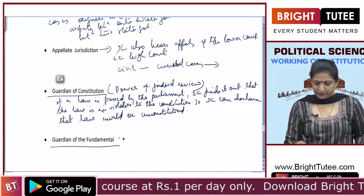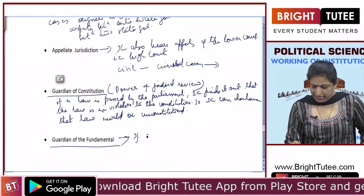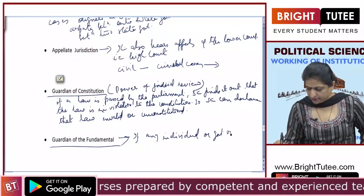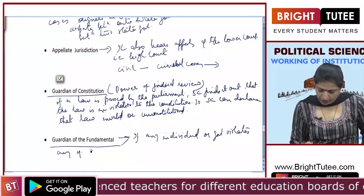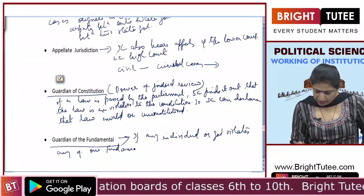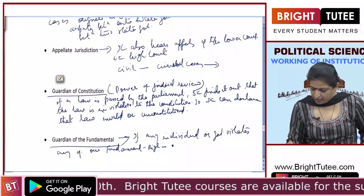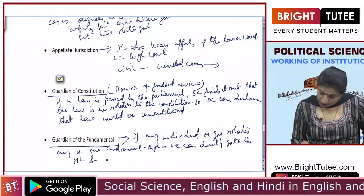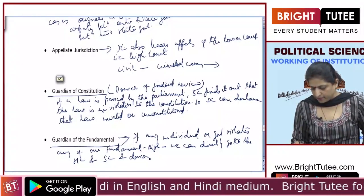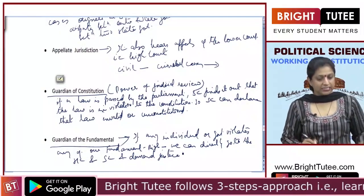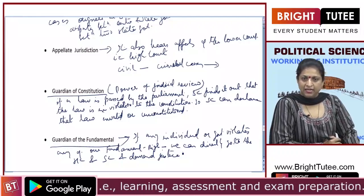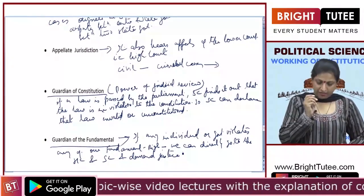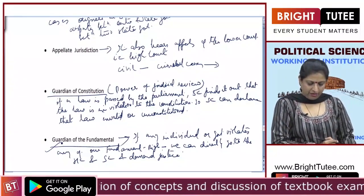The Supreme Court is also the guardian of fundamental rights. If any individual or government violates any of our fundamental rights, we can directly go to the High Court or the Supreme Court and demand justice. Under the right to constitutional remedies — discussed in the chapter on democratic rights — citizens can approach the Supreme Court or High Court to seek justice.